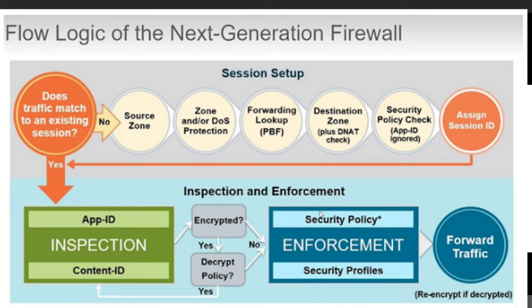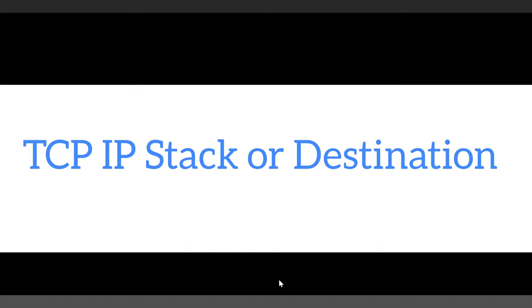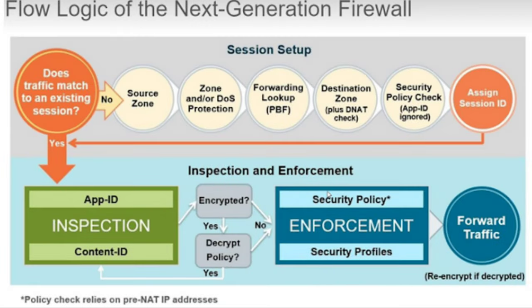In addition, whatever security profiles you have set up — such as antivirus, anti-spyware, WildFire, file blocking, etc. — based on security enforcement, the packet is forwarded to the TCP/IP stack or destination and then processed. This is all about the Palo Alto single-pass architecture and packet processing.